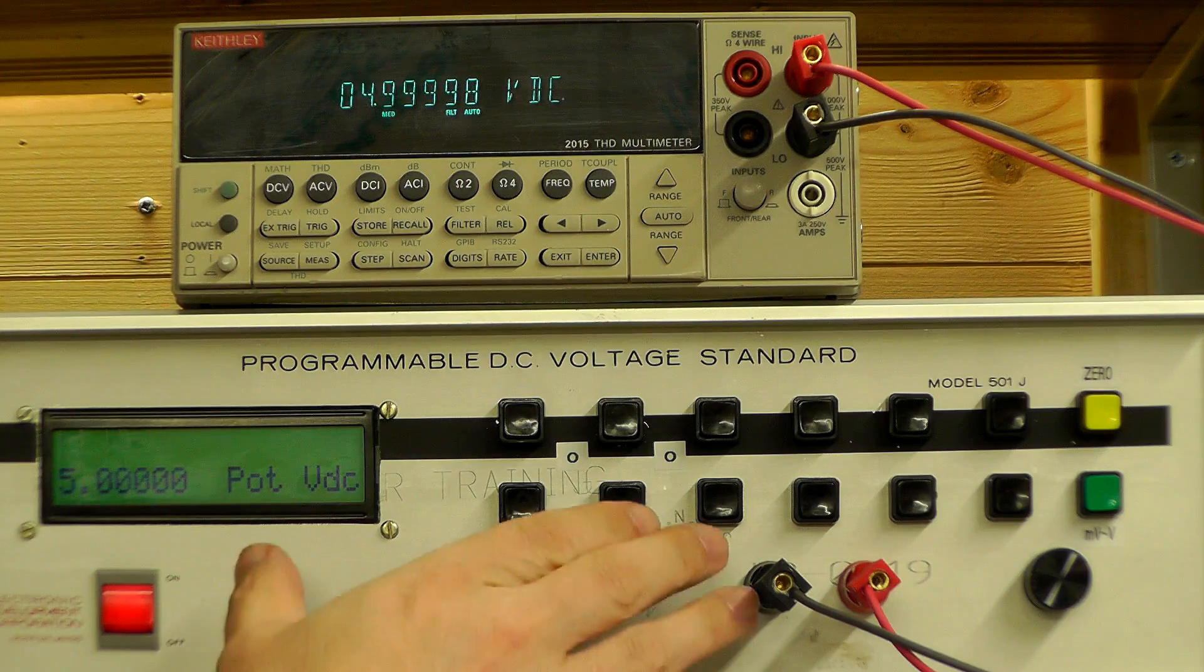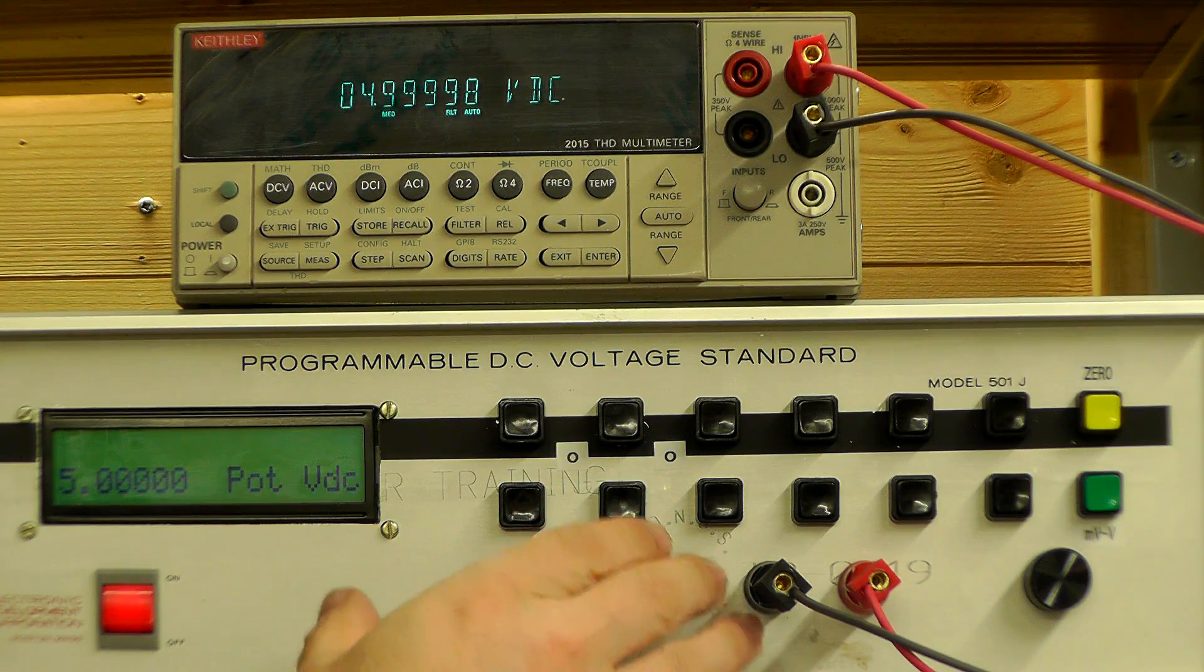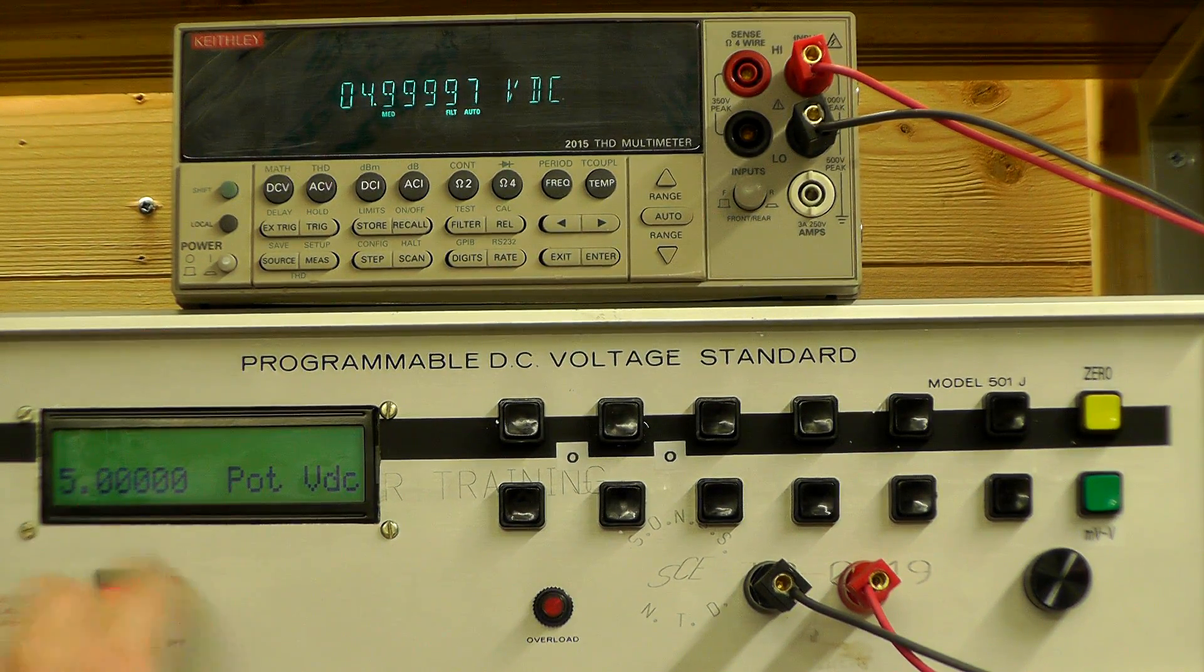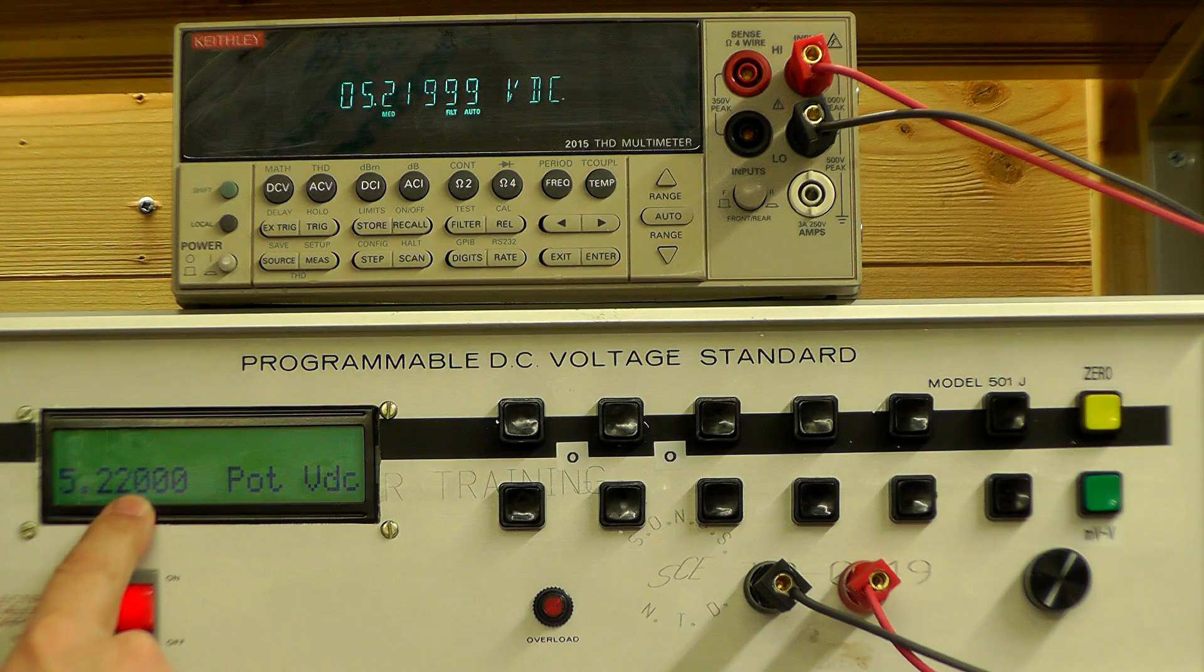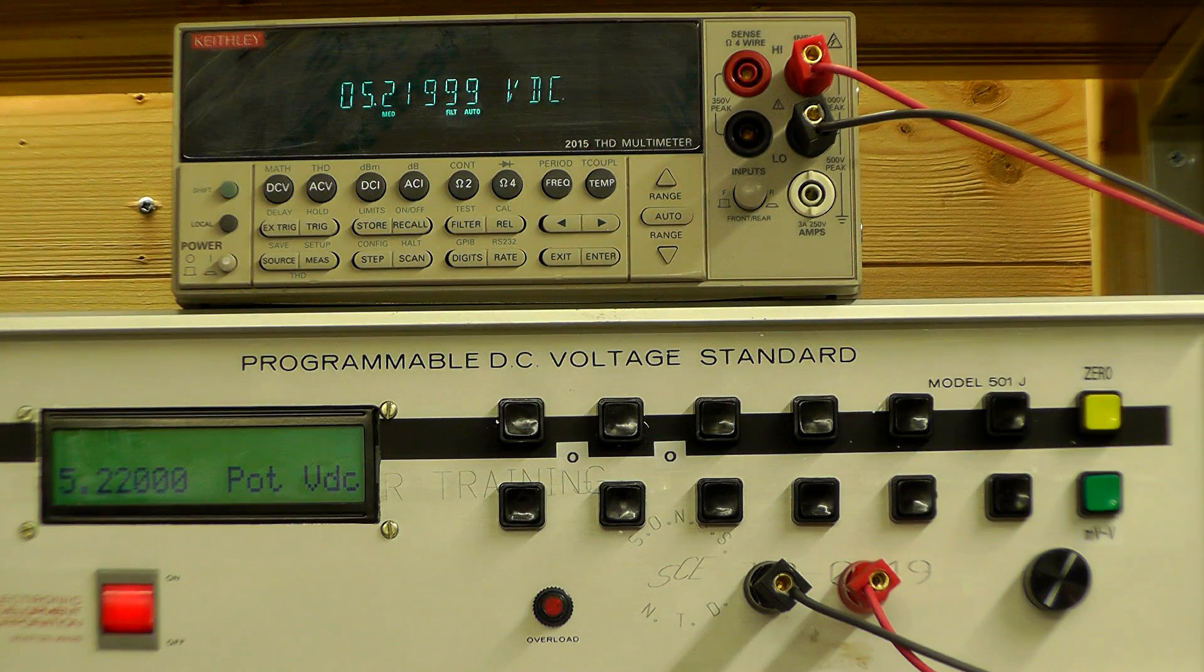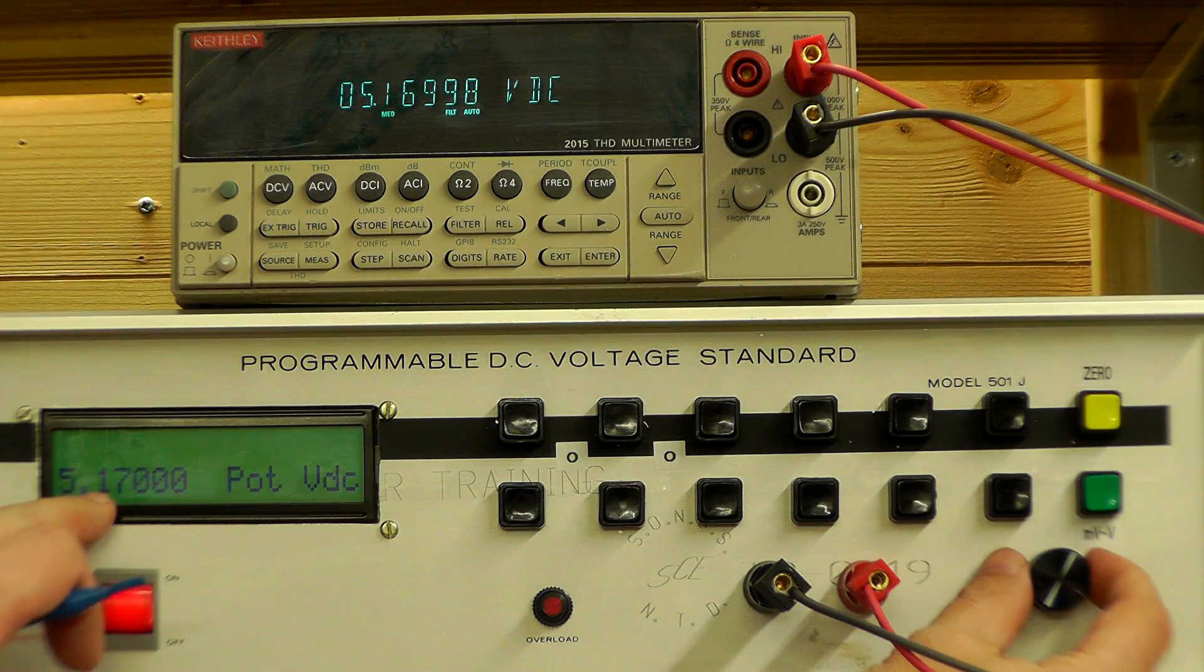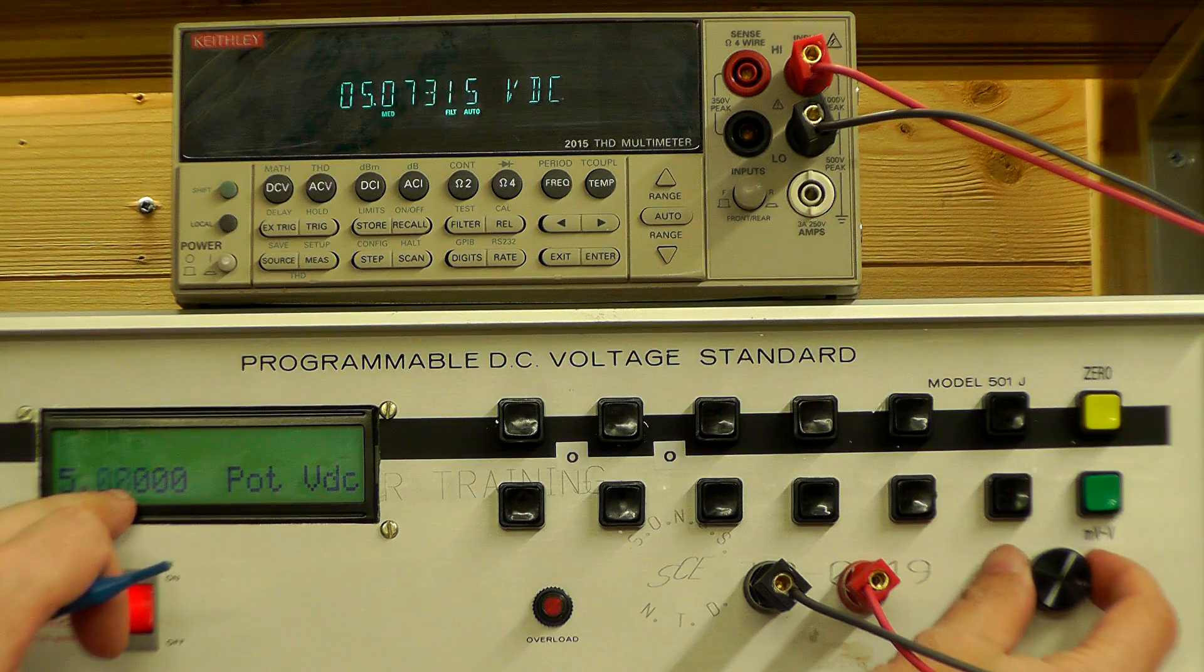And the Arduino is still in digital control of the 501J. So at the moment I've got the pots there you can vary up and down. So if I set it to 5.22 volts you'll see up on here 5.219999. Well it's near as damn it 5.2.